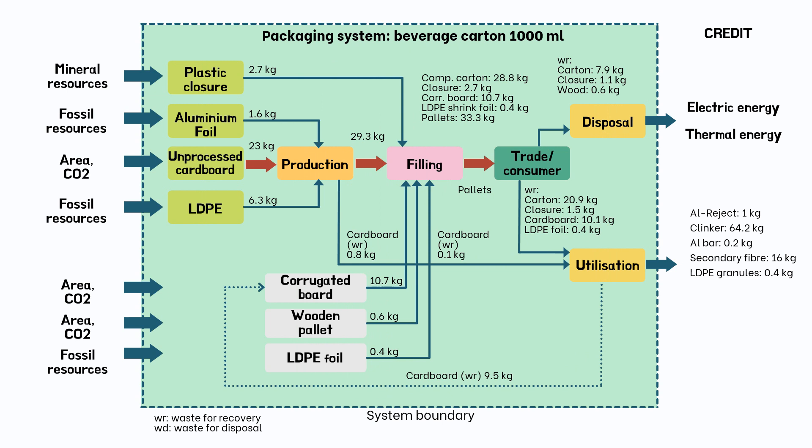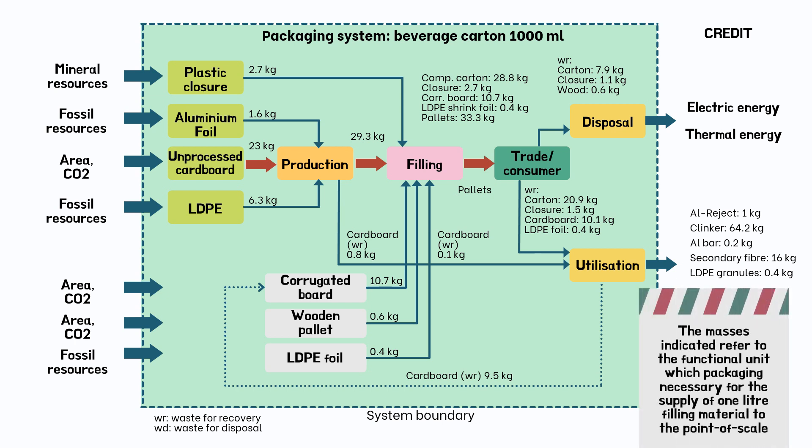Here is the simplified system flow chart of a packaging system for 1000 milliliters of beverage carton, covering the reference flows. The masses indicated refer to the functional unit — the packaging necessary for the supply of one liter of filling material to the point of sale. The beverage carton and the necessary fibrous materials are predominantly manufactured by integrated plants of the paper industry, which usually cover a product range of paper or cardboard products with different fiber compositions.